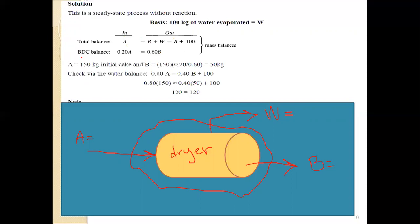So bone dry cake balance: amount of bone dry cake is 20%, so 0.2 times A equals the amount of solid material, which is 60%, times 0.6 B. The dry material balance or bone dry cake balance will simplify the solution.